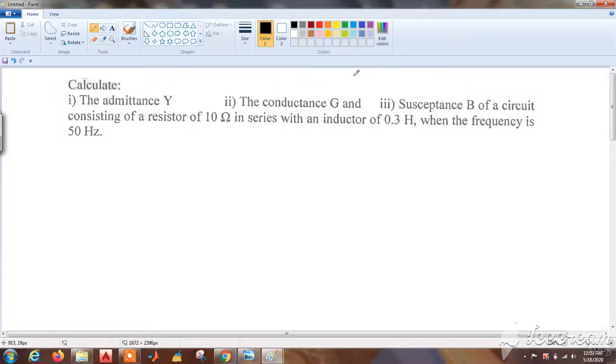Calculate the admittance Y, the conductance G, and the susceptance B of a circuit consisting of a resistor of 10 ohms in series with an inductor of 0.3 henry when frequency is 50 hertz.